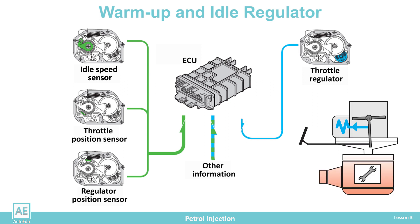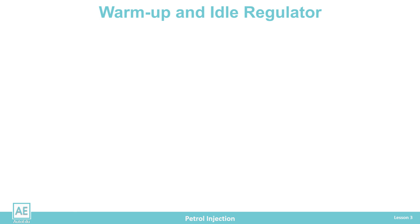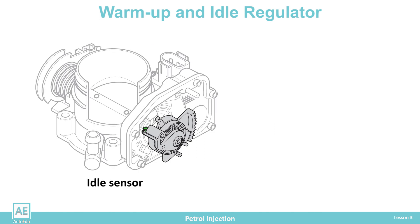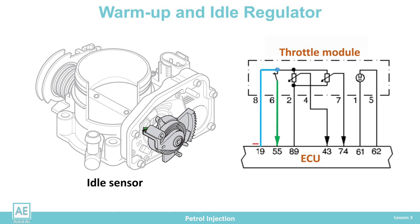In case of failure, the safety spring pulls the throttle to the zero position, and we have engine operation without regulation. The idle sensor is a button that activates when the throttle is in the idle position. The button is at minus potential.